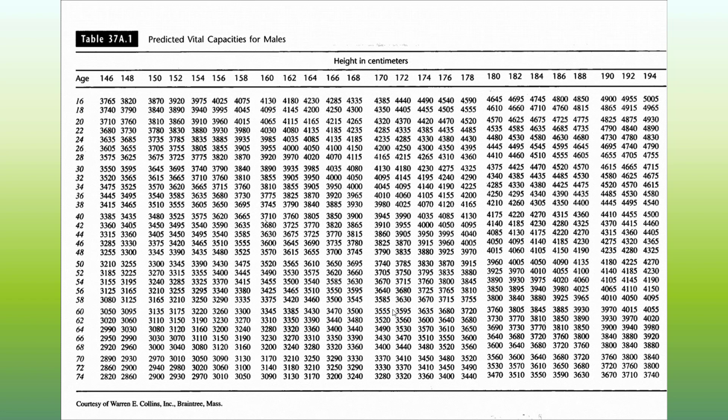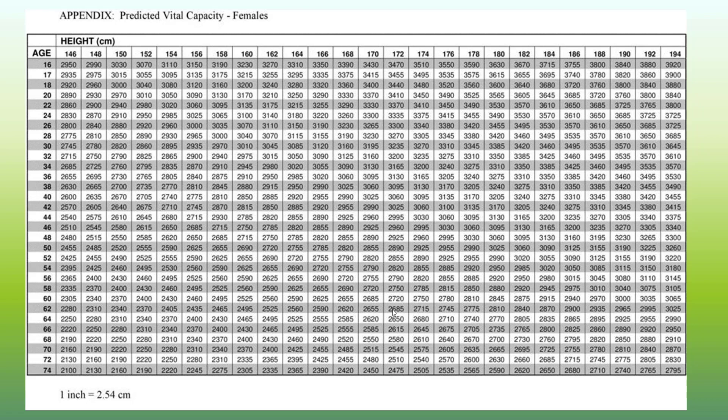If you are male, figure out your height in centimeters and determine your predicted vital capacity. For females, you'll also need your height in centimeters and your age. I am 166 centimeters and my age is 42 — actually 41, but closer to 42. My predicted vital capacity is 2,920 milliliters. Remember to convert to liters by dividing by 1,000, so my predicted vital capacity is 2.92 liters. That concludes station one.